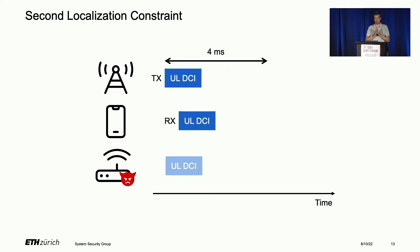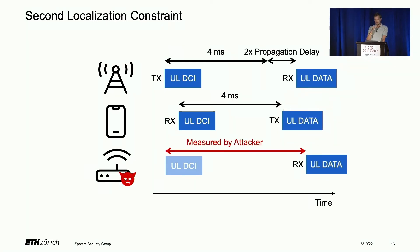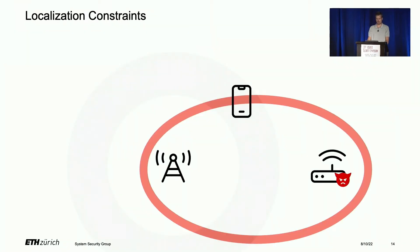The phone waits four milliseconds and replies with the uplink data, which arrives at the sniffer with some propagation delay. Therefore, the attacker can measure this time between when the uplink DCI was sent and when uplink data was received by the sniffer. This constrains the geometry of this ellipse.